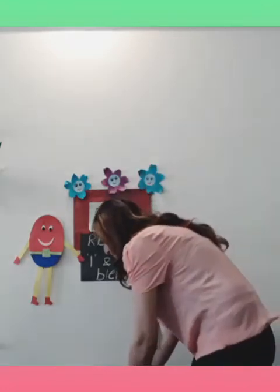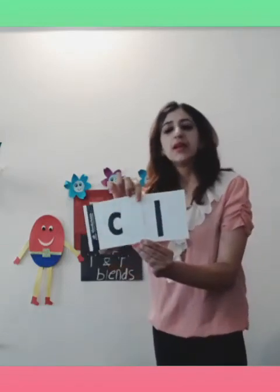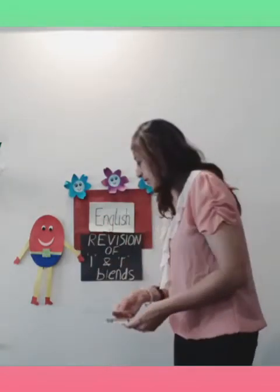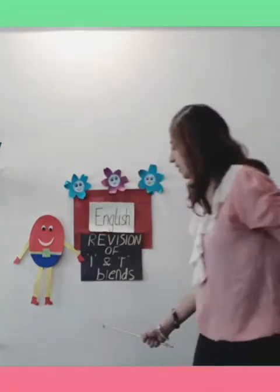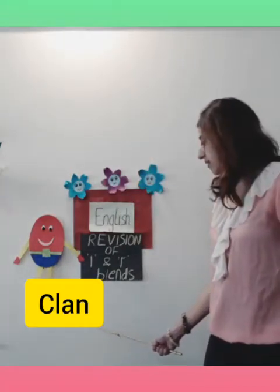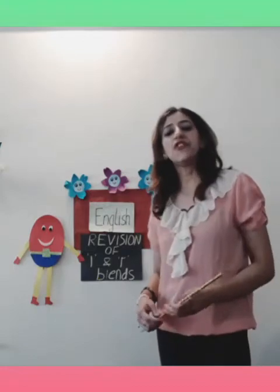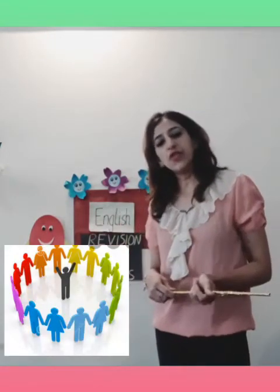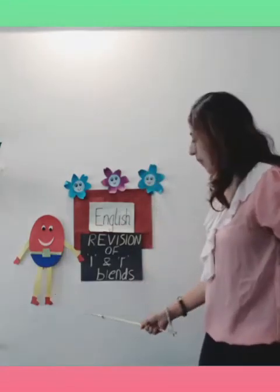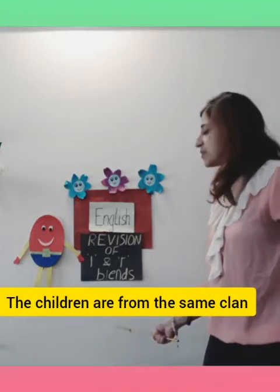Now we move on to the next one. The 'cl' blend. 'Cl' means a family or a large family — the word is clan. Now we form a sentence with the word clan. The children are from the same clan.